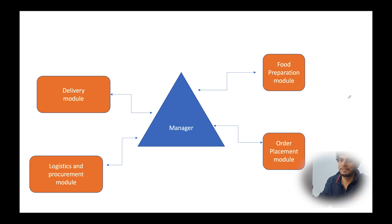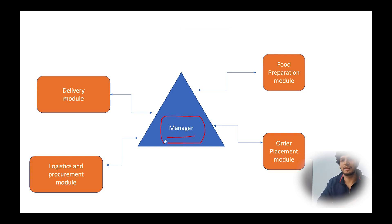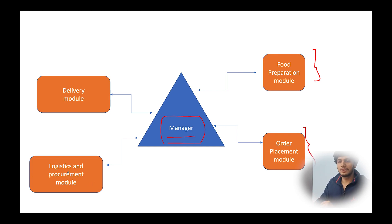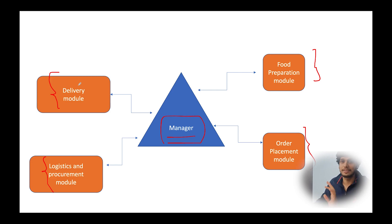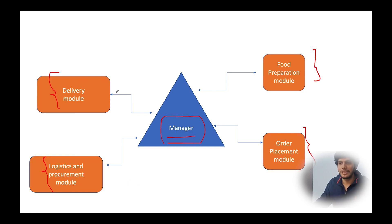An experienced developer will always go for a different approach. He will create a Manager class responsible for checking whether all the other sub-modules are behaving appropriately. We have four modules in total: the Food Preparation module, the Order Placement module, the Logistics and Procurement module, and the Delivery module. The Manager class's only responsibility is to verify these modules are operating correctly. Whenever any one module goes into a corrupt state, it will not impact the rest — they can continue to work independently.